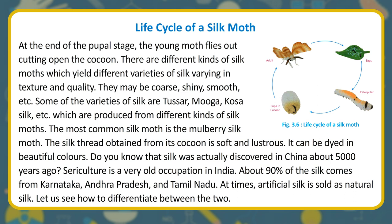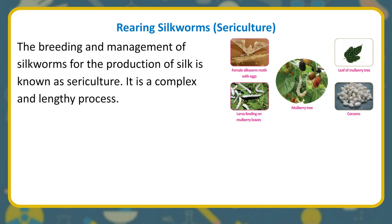Did you know that silk was discovered in China about 5000 years ago? Sericulture is a very old occupation in India. About 90% of the silk comes from Karnataka, Andhra Pradesh, and Tamil Nadu. At times, artificial silk is sold as natural silk. The breeding and management of silkworms for the production of silk is known as sericulture. It is a complex and lengthy process.